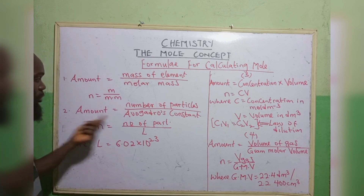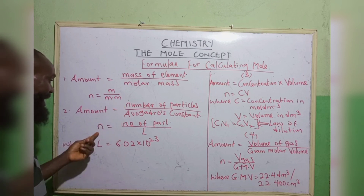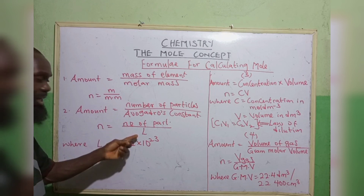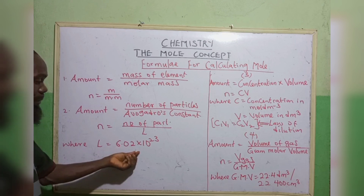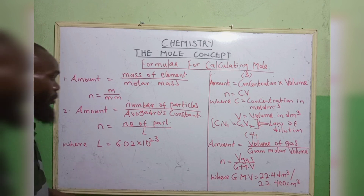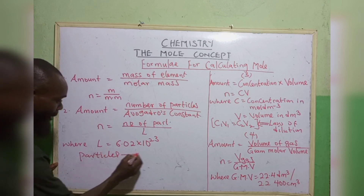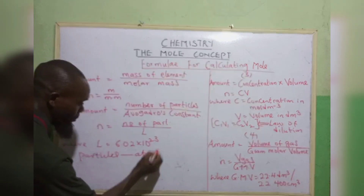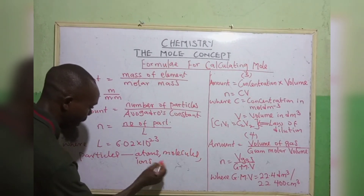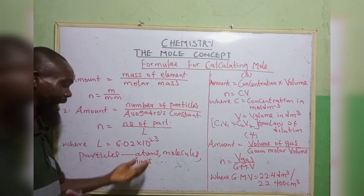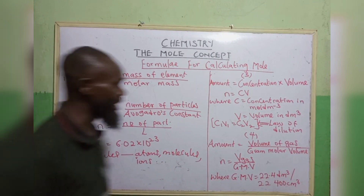Formula two: amount equals to number of particles divided by Avogadro's constant. That is n equals to number of particles divided by L, where L is the Avogadro's constant, which is 6.02 multiplied by 10 to the power 23. When we say particles, particles can mean atoms, molecules, ions, and so on.